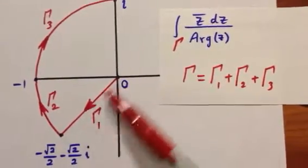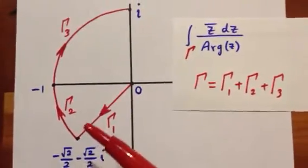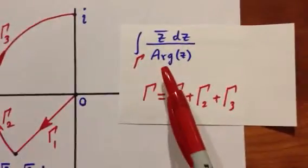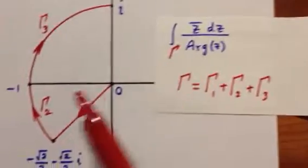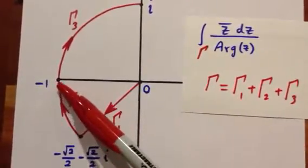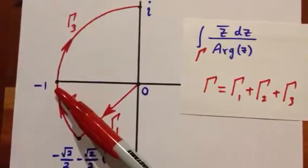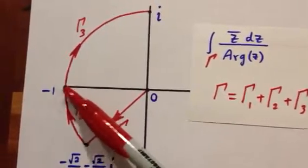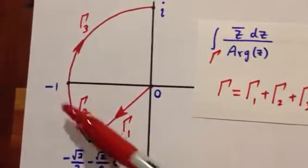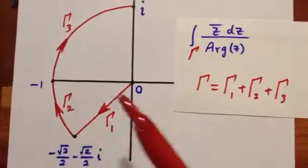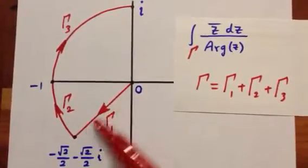We parametrize that separately, and then we need two for the circle because the principal argument of Z is discontinuous here. Below this it's close to negative pi, above it is close to positive pi, so there is a discontinuity here. That's why we have to split the circle into two pieces.